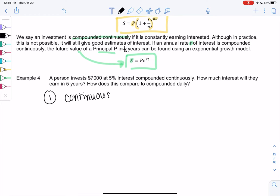So we'll say S is 7,000, P is 7,000, the investment. E to the RT. So since R is 5%, we'll use 0.05T.